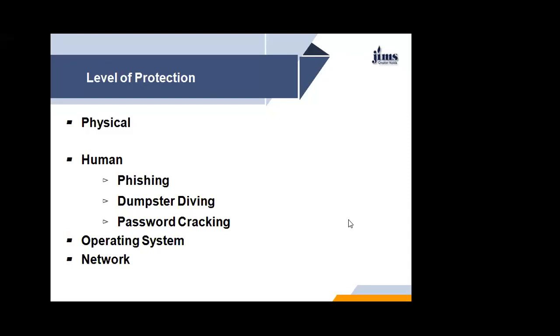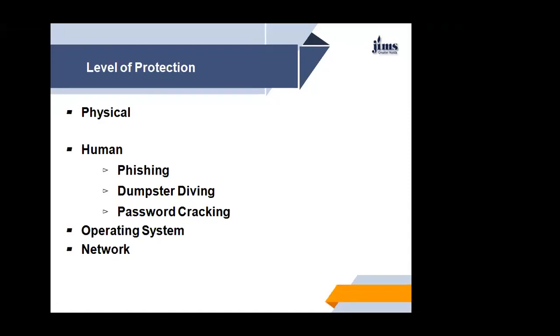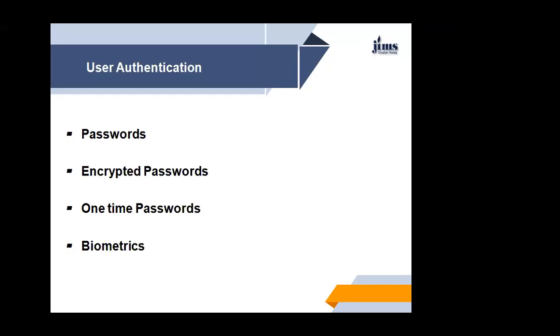In levels of protection, we discuss the physical level, human level—which includes phishing where someone creates a website similar to another, dumpster diving, password cracking using algorithms—operating system level, and network level. We can also protect at the physical level where the system can be physically harmed. Different user authentication methods are available.